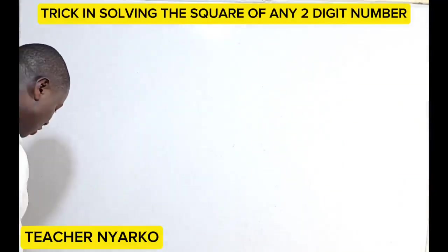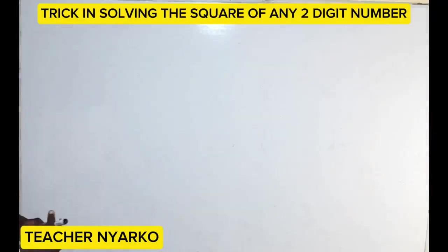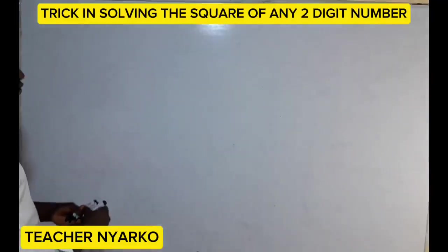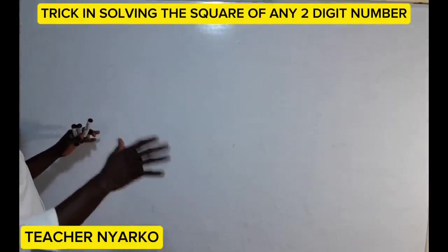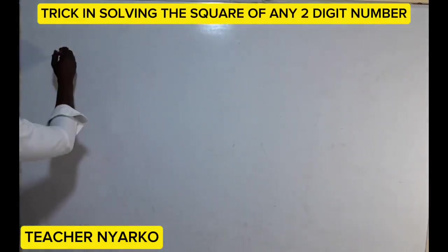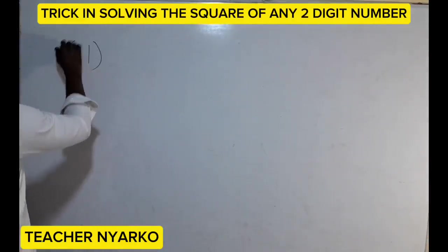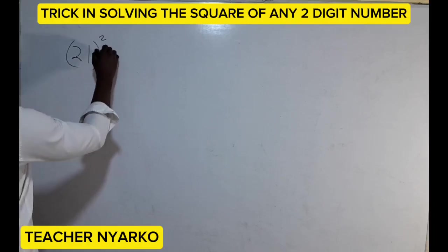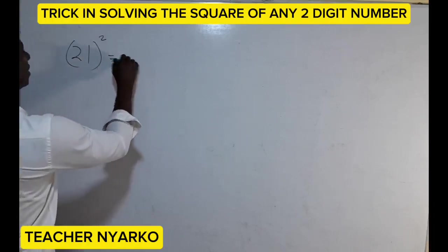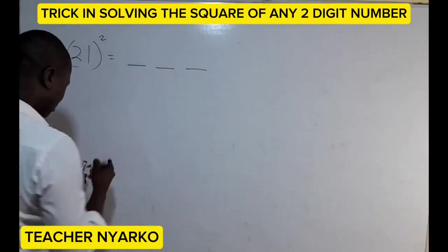Let me show you how to find the square of any two-digit number. So let's assume we have 21 squared. We are going to split this into three parts.